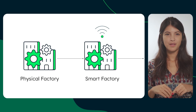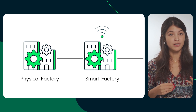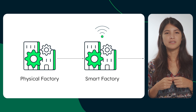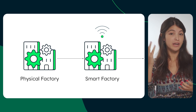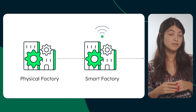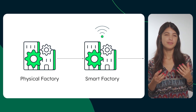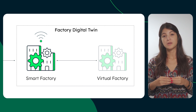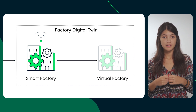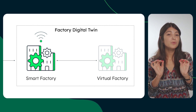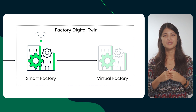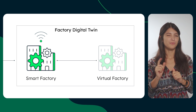Now that the term virtual factory is clear, you might be asking yourself: why do you need one, and how does it really work? To answer this question, we have to take a small step back. You begin by digitizing your physical factory. Think of your physical factory as a regular house. Adding IoT sensors is like putting up security cameras that tell you if anything changes — it becomes a smart house. Now, imagine making a digital copy of your factory on a computer, like a virtual house. You can play with your virtual house to see what works best without touching the real house, testing things out without any real-world impact, just like trying out different furniture arrangements without rearranging your real furniture.